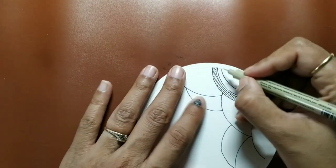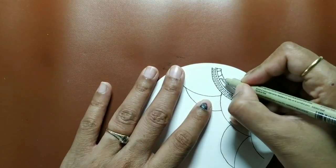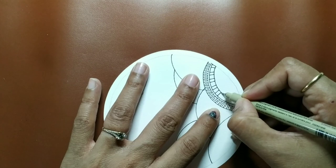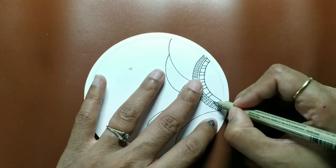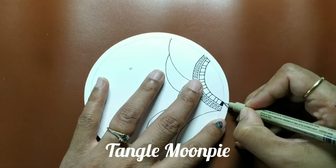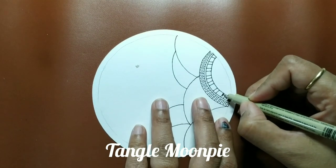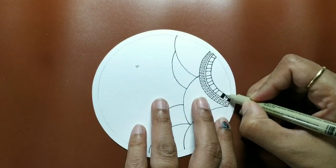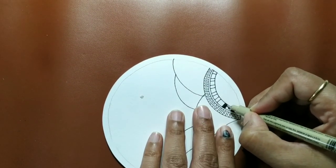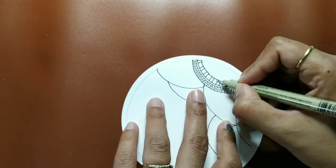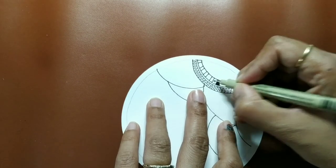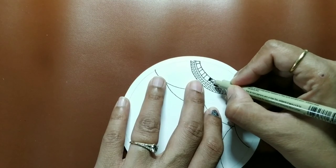We are going to add some knight's bridge. Slowly take your time, do the inking. Knight's bridge, a zentangle original. Do da is also a zentangle original.